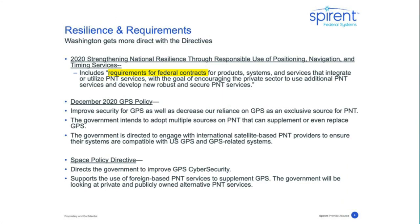Since then, Washington has been getting more direct. The 2020 Strengthening National Resilience Through Responsible Use of Positioning, Navigation, and Timing Services required contingency plans for GPS failure and put bigger teeth into the mandate, stating that federal contracts would have requirements for new PNT technologies within a year. The December 2020 GPS policy reaffirmed that the U.S. is not walking away from GPS, recommitting to provide GPS to all — focused on security, not replacement.